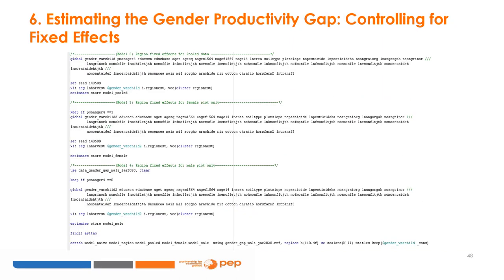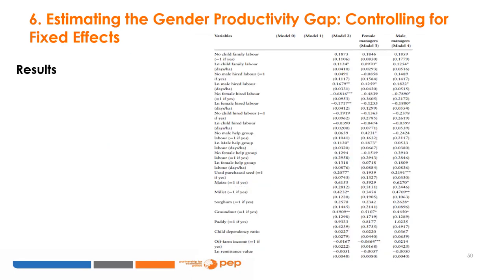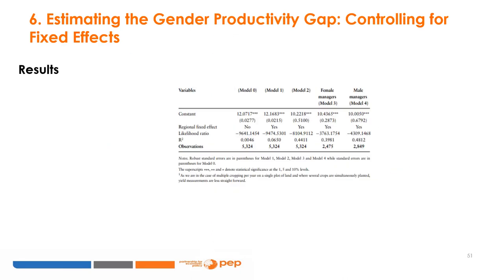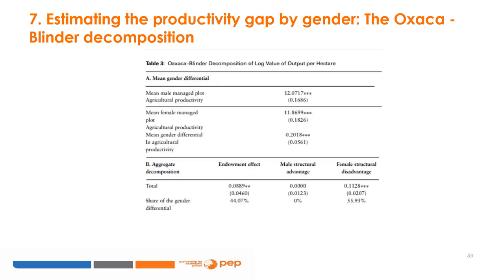Here is the STATA code which estimates the gender productivity gap by controlling for fixed effects. The following slides present the results. Here is also the STATA code to estimate the gender productivity gap using the Oaxaca-Blinder decomposition, and the following slides present those results as well.